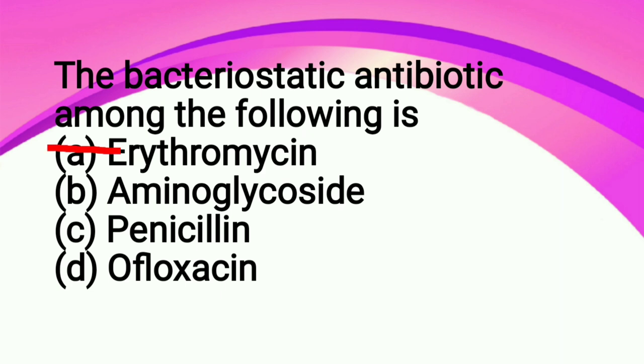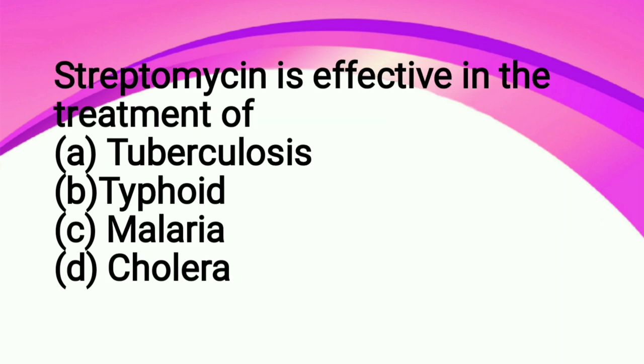Streptomycin is effective in the treatment of: A tuberculosis, B typhoid, C malaria, D cholera. So the correct answer is tuberculosis. This disease tuberculosis is caused by Mycobacterium tuberculosis, and this antibiotic streptomycin is a narrow spectrum antibiotic.